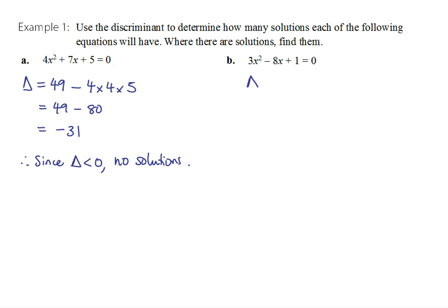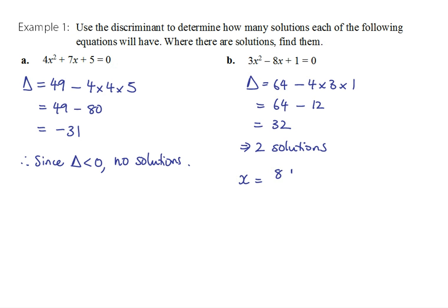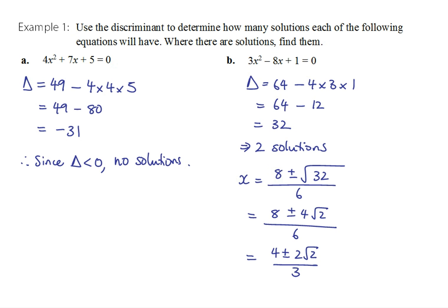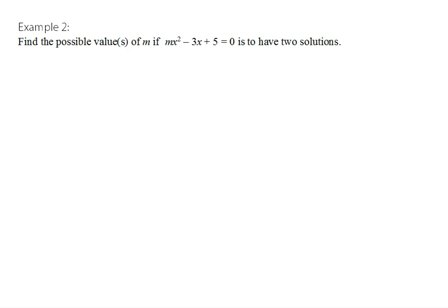In part b, looking at the discriminant: b squared is 64, minus 4 times a times c, so 64 minus 12, which gives 32. We have a positive discriminant, so we're going to have two solutions. We can go ahead and find them: x equals negative b — so negative negative 8 — plus or minus the square root of 32, all divided by 2 times a, which is 6. Root 32 needs simplifying: 32 is 16 times 2, so root 32 is 4 root 2. There's a common factor of 2 throughout the fraction, so dividing everything by 2 gives our solutions in simplest form.